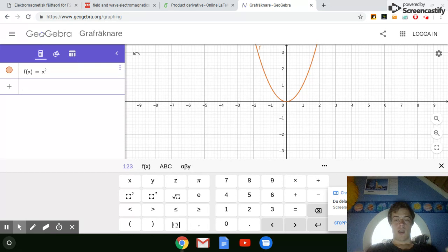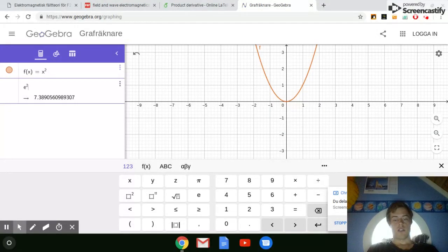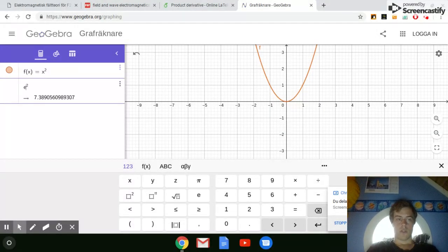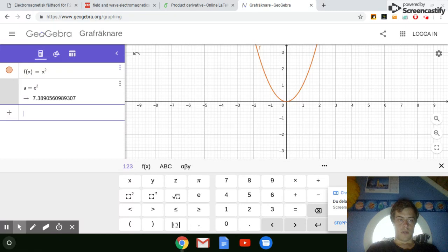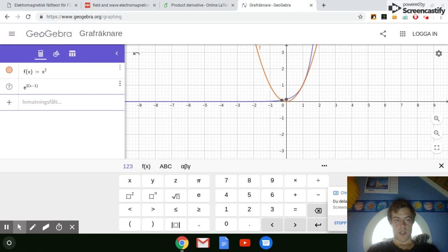And we're going to multiply by the value of the product derivative at that point, which is going to be e squared. I'm not going to show the calculations now, but you can clarify this on your own. And then, e squared times this x minus 1.